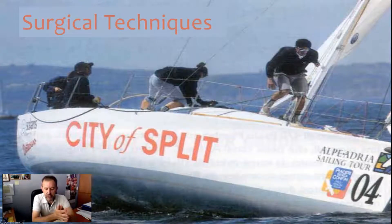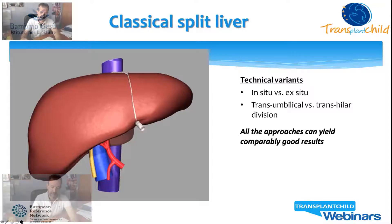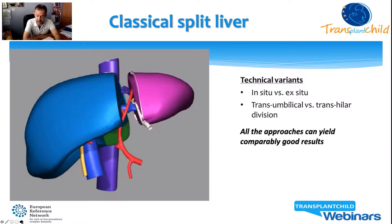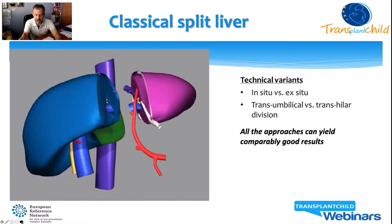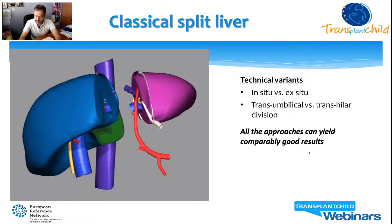The classical form of splitting yields a left lateral segment — segments two and three — for a small child, and an extended right graft — segments one and four to eight — for an adult recipient. Several techniques of split liver have emerged, such as the in-situ and ex-situ techniques, and the trans-hilar and trans-umbilical division. All these techniques can yield comparably good results if chosen on the basis of donor and recipient characteristics and according to the logistical settings.